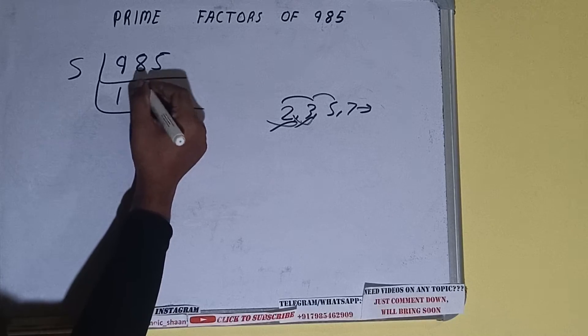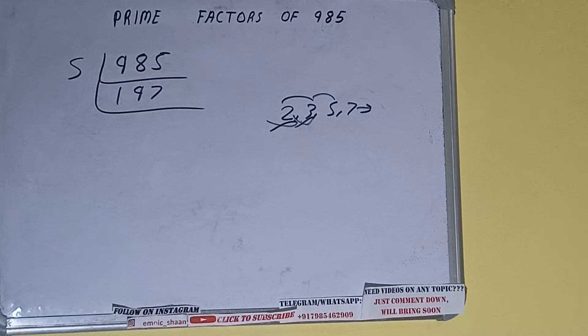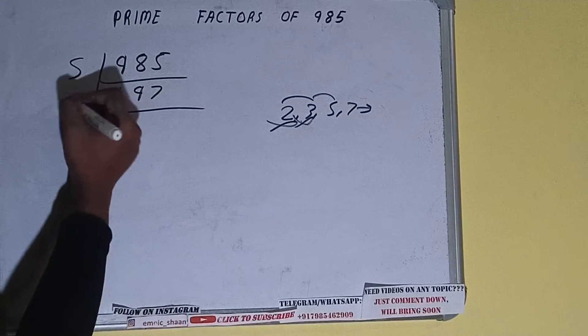And 197 is further not divisible by five. And 197 is also a prime number, so it is only divisible by itself, that is 197.